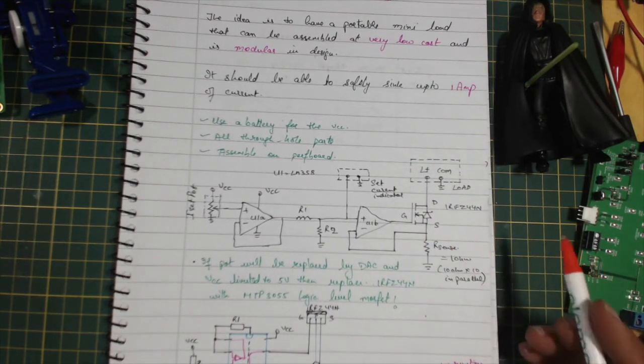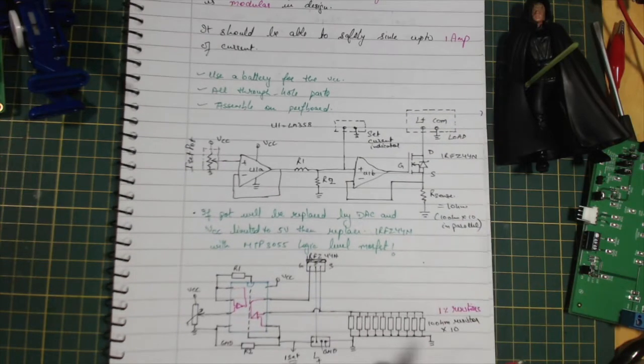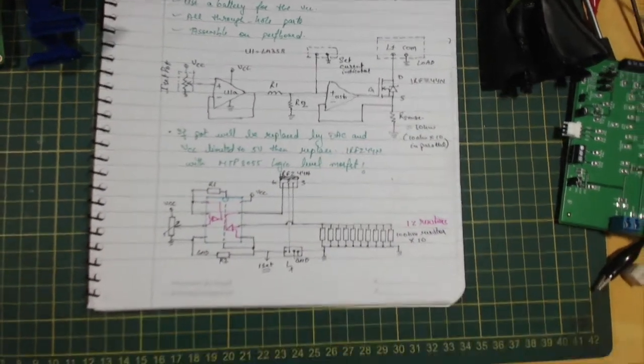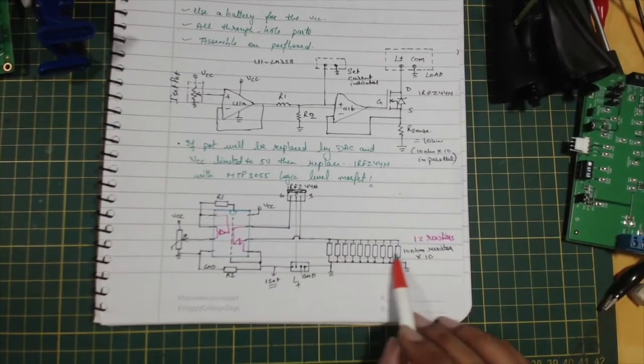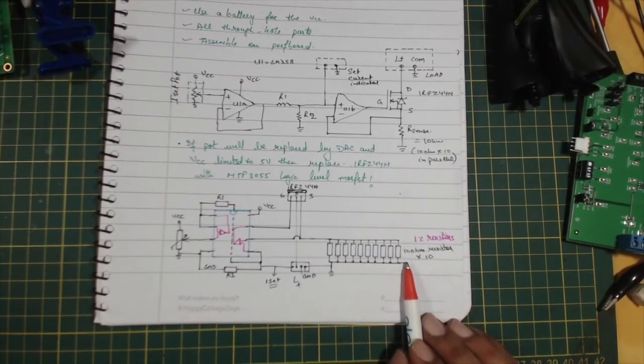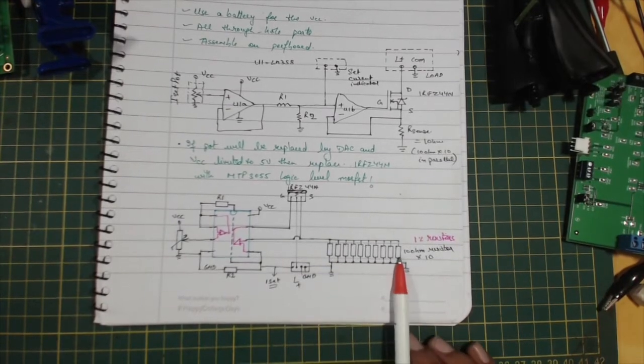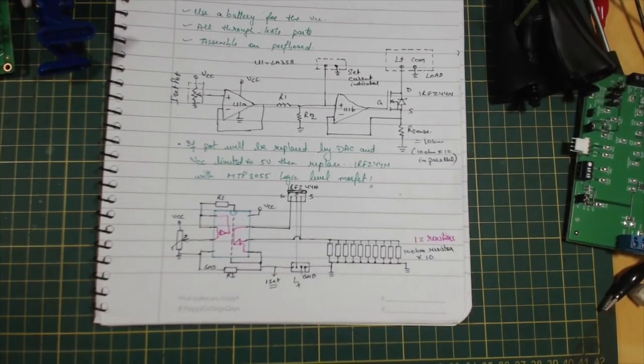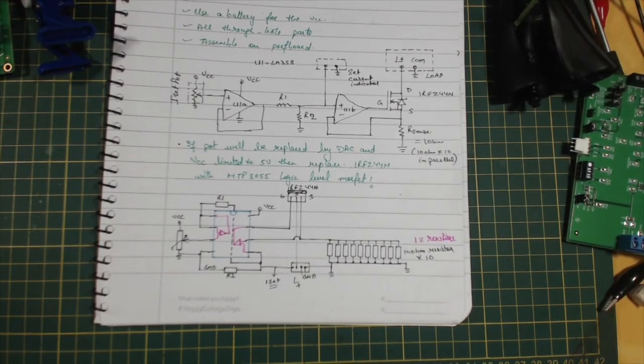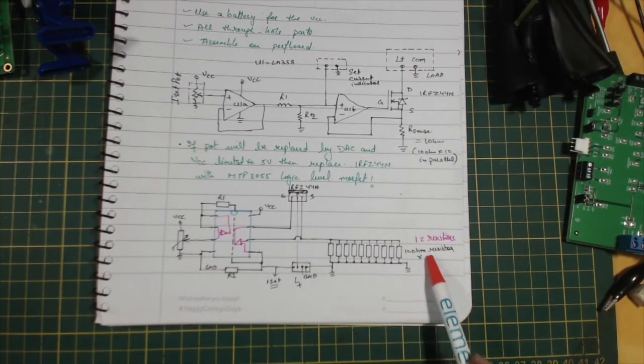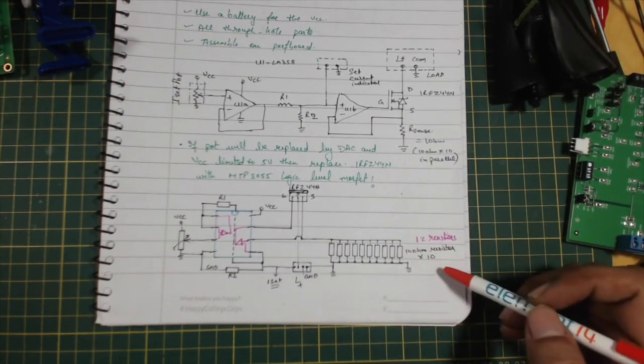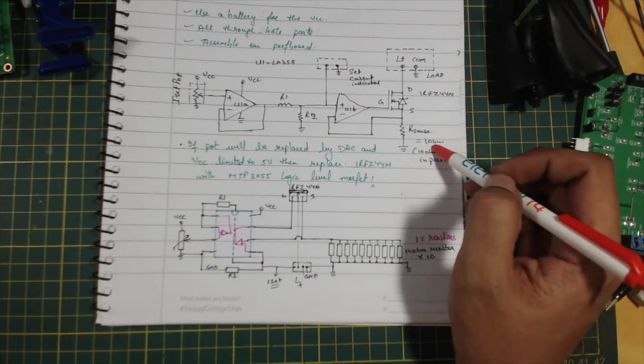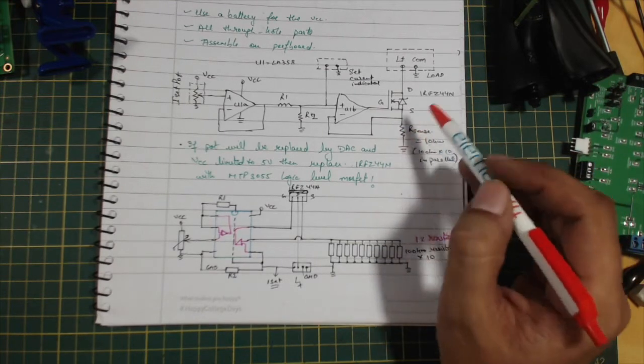In my layout, I've got 10 ohm resistors, 10 of them chained. These are 1% resistors. Something I bought in bulk about 35 Indian rupees, that's half a dollar for about 500 quantity. They were really cheap when I bought them like a decade ago. These are 1% resistance, 10 ohms connected in parallel, so they gave me a one ohm resistance and this is my sense resistance.